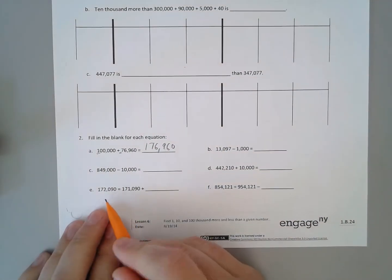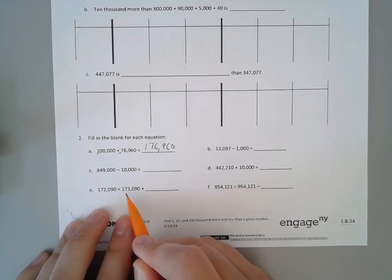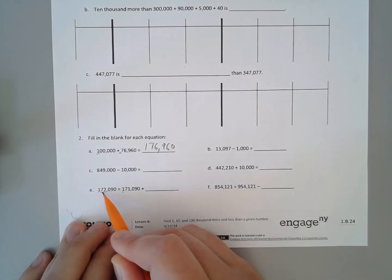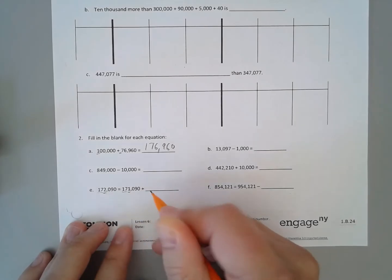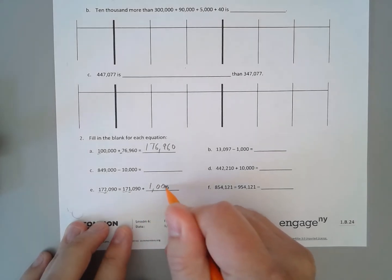This example here, we have 172,090 equals 171,090 plus what? If we go down the line, 100,000 are the same, 10,000 are the same. Our difference comes in the thousands. So we're going from a 1 to a 2, so that means we are adding 1,000.